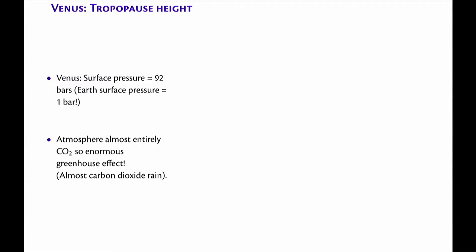So you're thinking, when we talk about global warming, we're talking about going from 300 parts per million to 600 parts per million. On Venus, it's already 1,000 to 3,000 times more concentration, and 100 times more atmosphere — so 300,000 times more carbon dioxide.